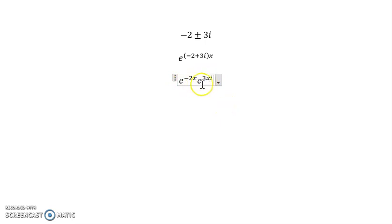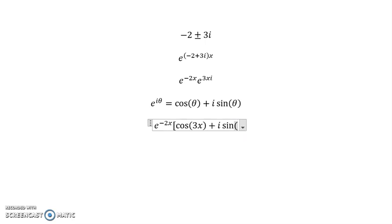Now we can apply Euler's formula to the complex part. You may remember that e^(iθ) equals cosine θ plus i sine θ. We're going to apply that formula just to this portion, just to the complex portion. You're going to keep the real part, and then inside the parentheses, we're going to take everything in front of the i and put it inside the trig functions: cosine 3x plus i sine 3x.